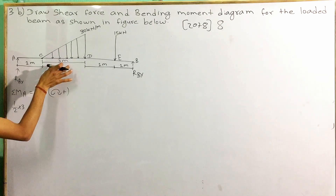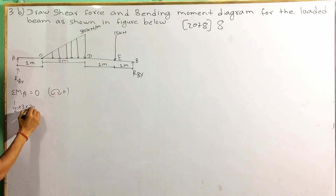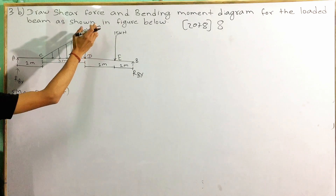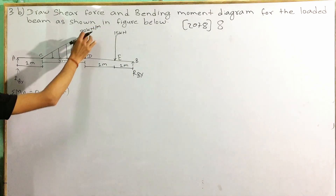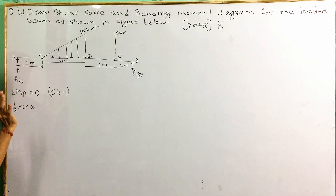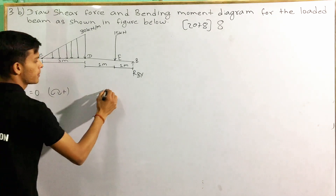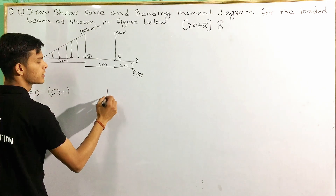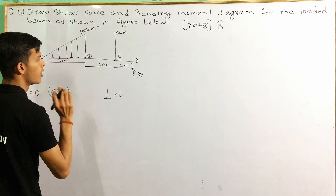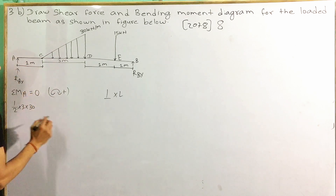This is the base. The distance into the load is 30 kilonewtons per meter. This is kilonewtons per meter. 1 by 2, times 3 into 30 — this is the load. The moment is the perpendicular distance into load.